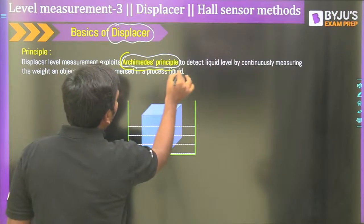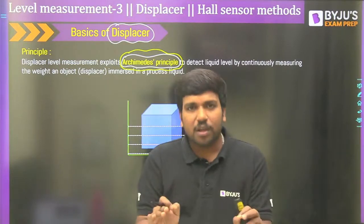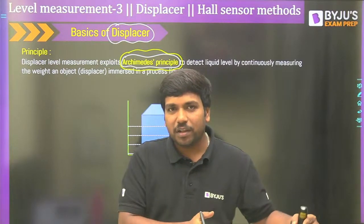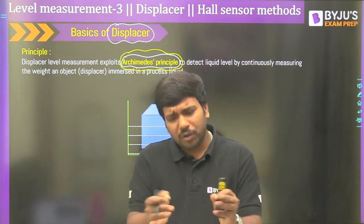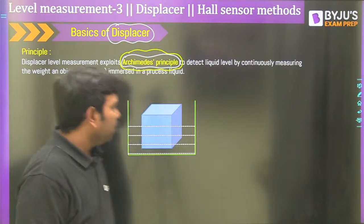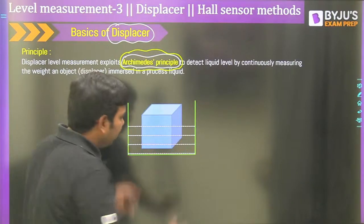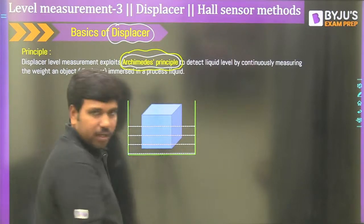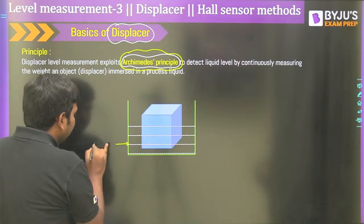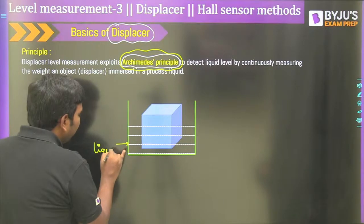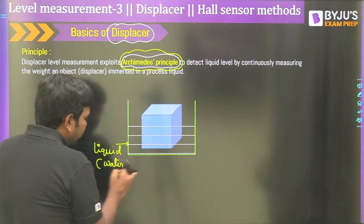The actual weight of the cube can be written as mass into gravity (Mg). If I say this cube has a weight of 2 kg in air and I keep it inside the water, the net weight will be less than 2 kg. That's why whenever you are in a swimming pool, you feel that your weight is lost — because the net weight is going to be less than the actual weight.